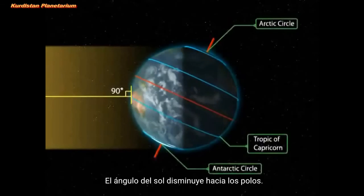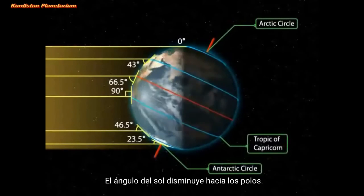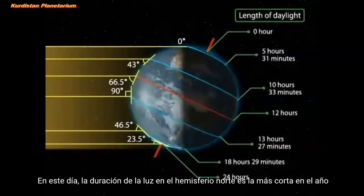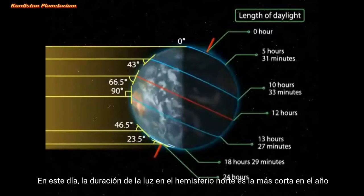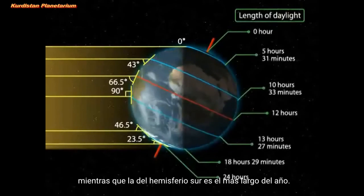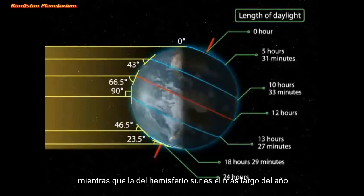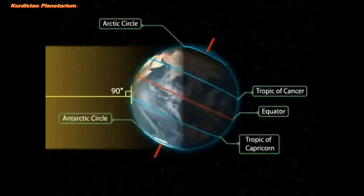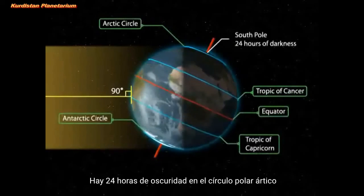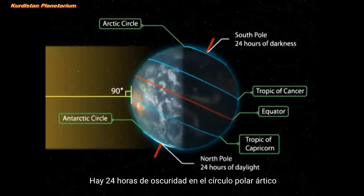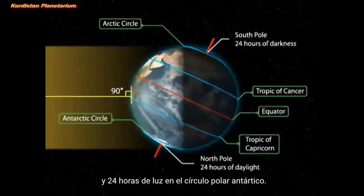The angle of the Sun decreases towards the poles. On this day, the length of daytime in the northern hemisphere is the shortest in the year, while that of the southern hemisphere is the longest in the year. There are 24 hours of darkness at the Arctic Circle and 24 hours of daylight at the Antarctic Circle.